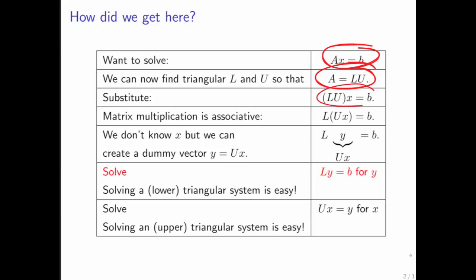We can then substitute in L times u in for a. We can put some parentheses in convenient places. We can recognize that u times x can be given a symbol y, the vector y. And then if we first solve for y, then later we can solve for x. And all I'm doing here is I happen to change my mind and call the vector y vector z instead.